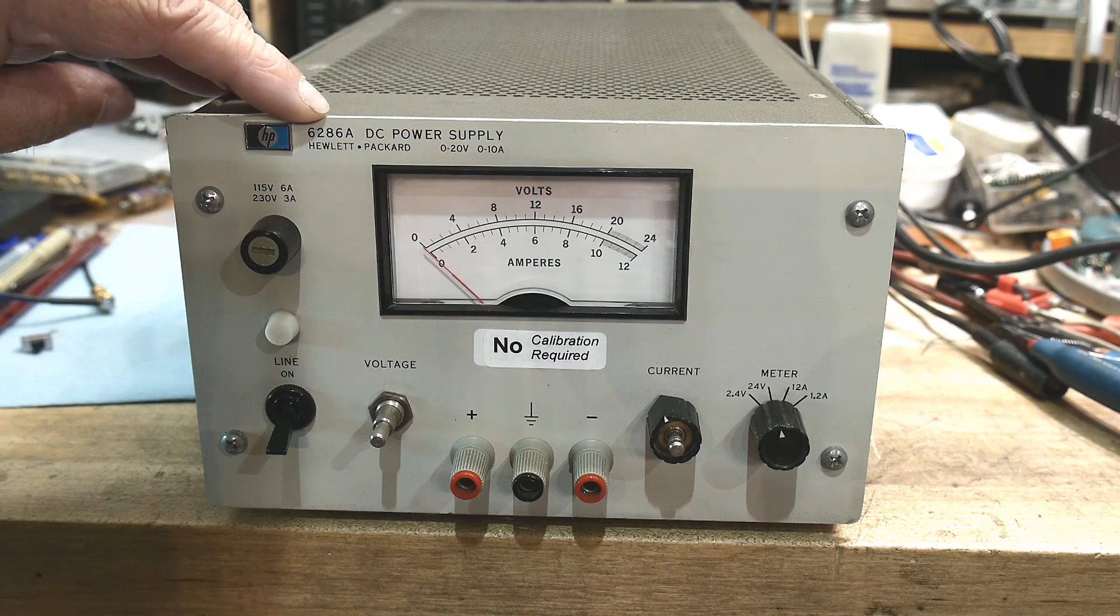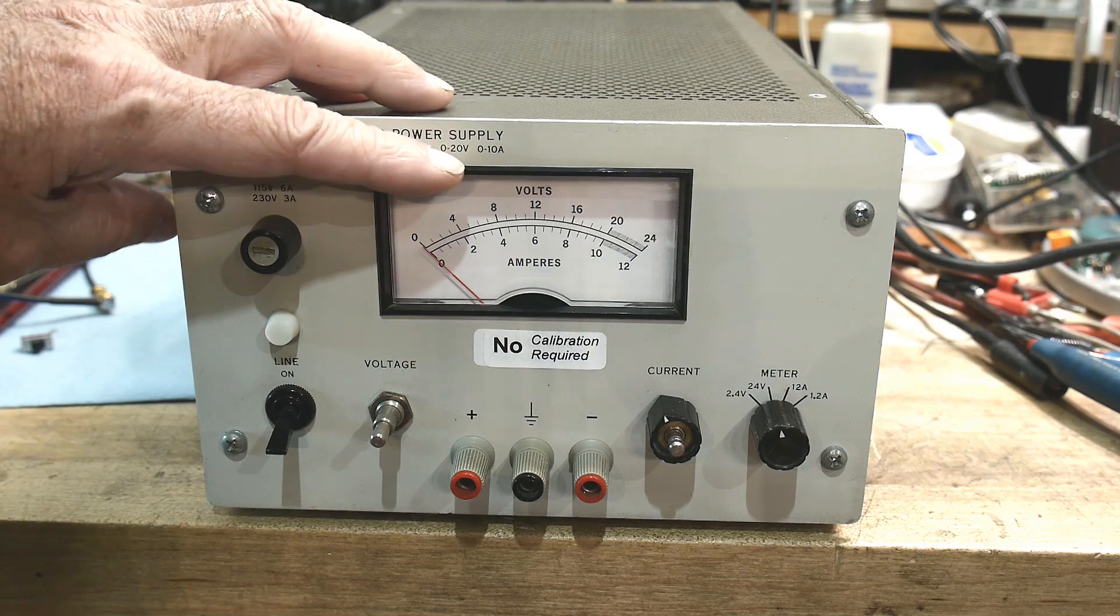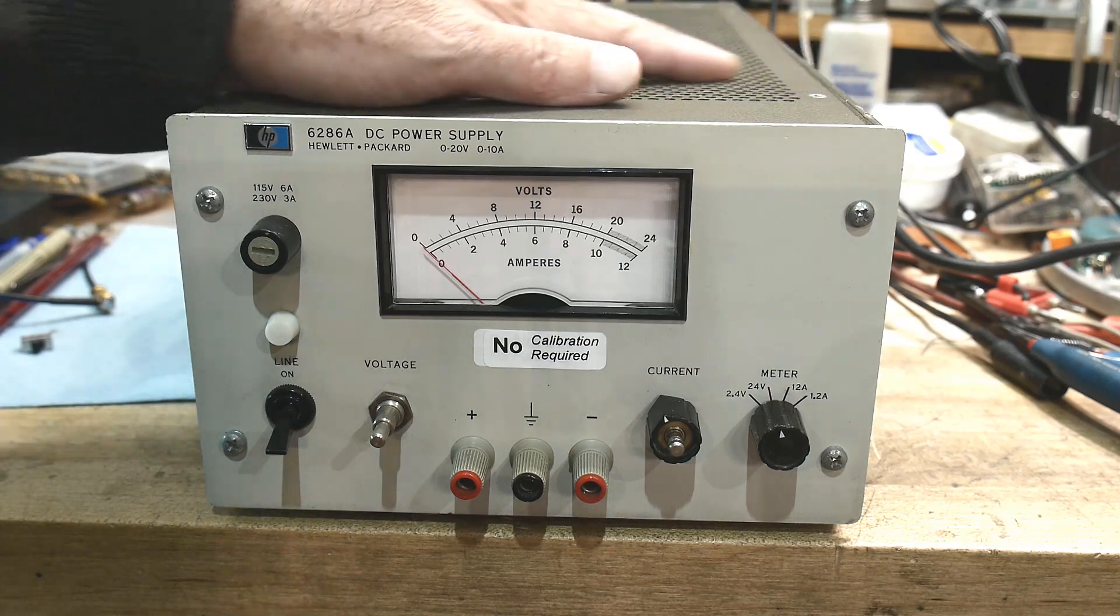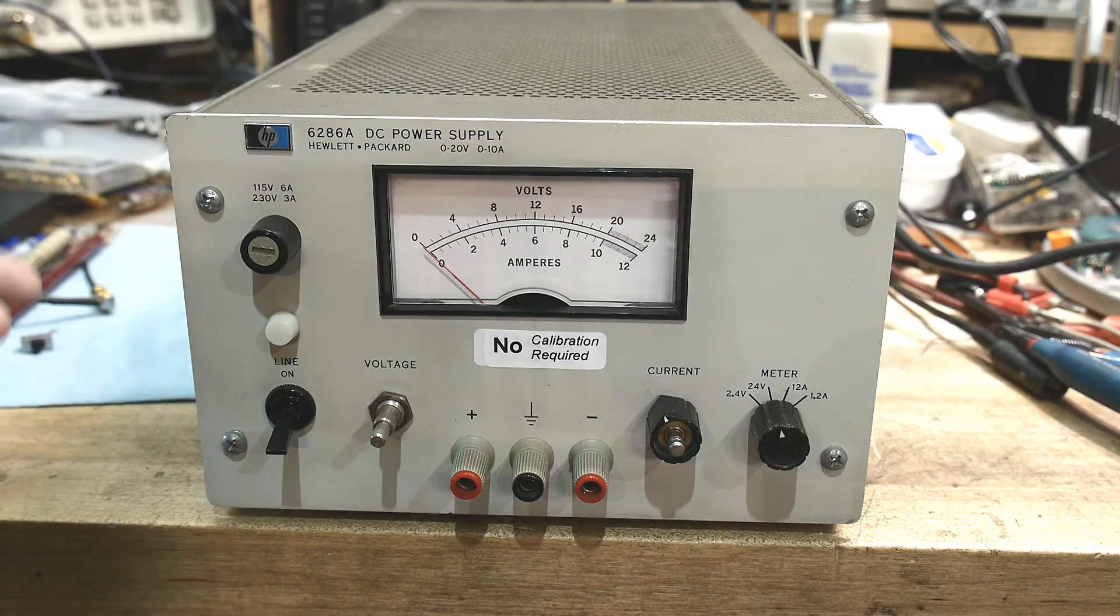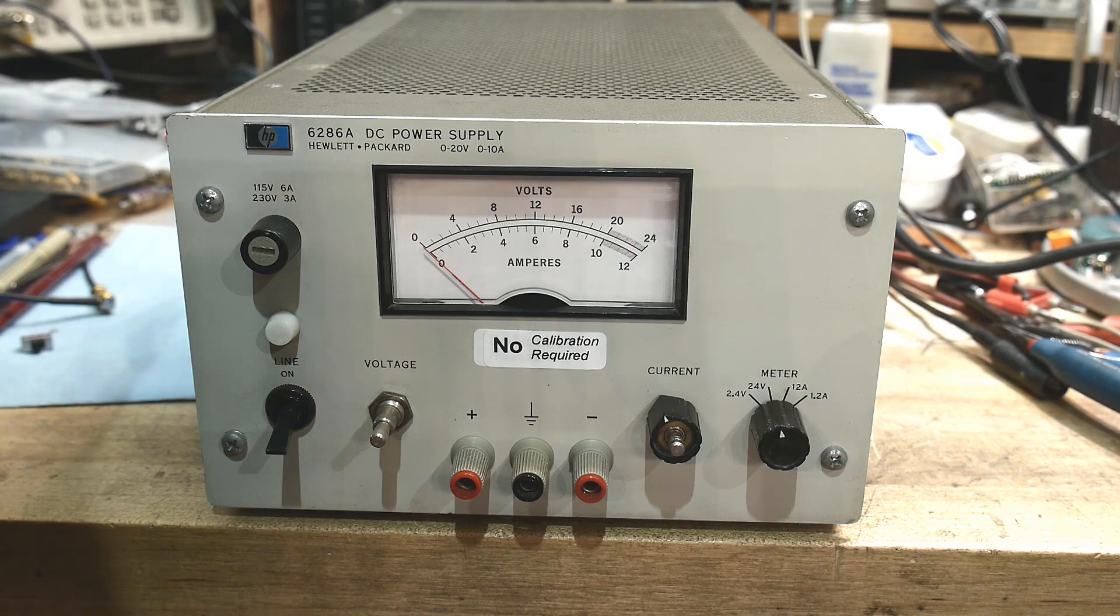This is a 6286A DC power supply, and it's 0-20 volts, 0-10 amps, all linear. I paid $40 for it, so that is a very good deal.